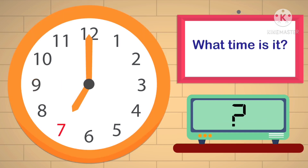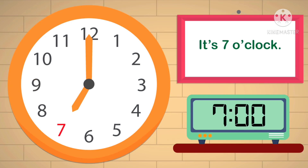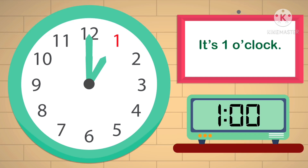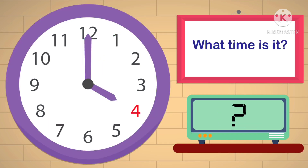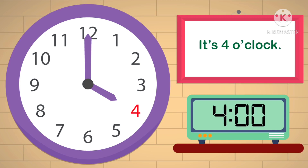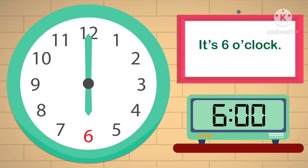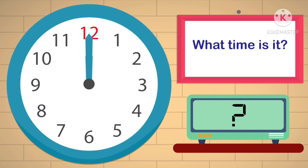Now, can you tell me the time? Yes, it is 7 o'clock. The hour hand is at 1, so the time is 1 o'clock. Next, the hour hand is at 4 and the minute hand is at 12, so the time is 4 o'clock. Now what is the time? You can see the hour hand is at 6 and the minute hand is at 12, so it is 6 o'clock.